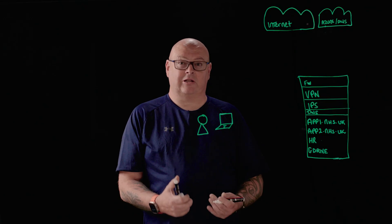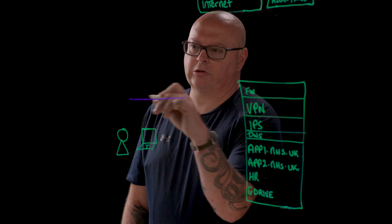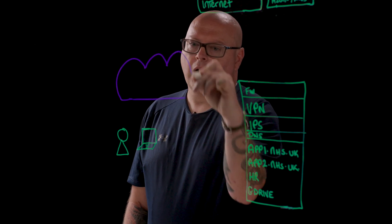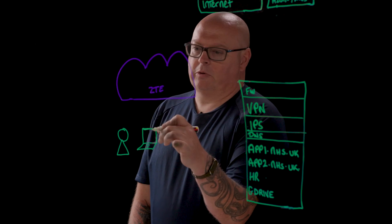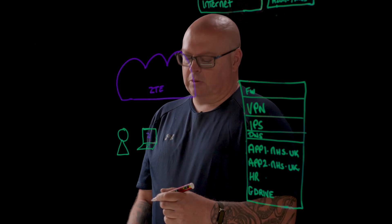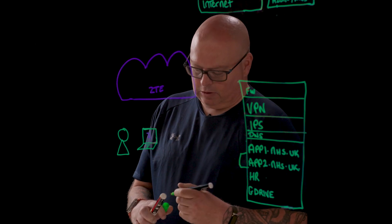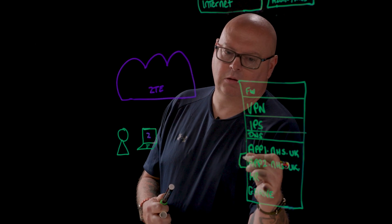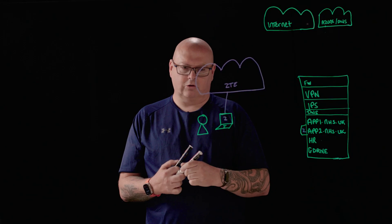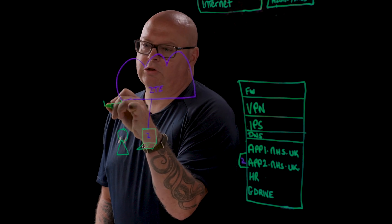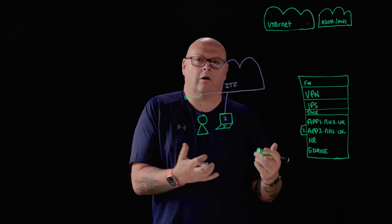So let's now discuss the Zscaler way of doing this with our private access solution. We need to draw in the Zero Trust Exchange, and we need to get traffic to the Zero Trust Exchange. We deploy client connector on our laptops and we deploy app connectors in our data centres. That user device now sends traffic to the Zero Trust Exchange. We check their identity — who are they, where are they, what are they trying to access, are they allowed to access this?